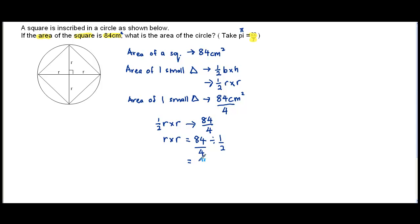And that would bring us to 84 over 4 times 2 over 1. Cancel this. And this becomes 2. And this becomes 42.